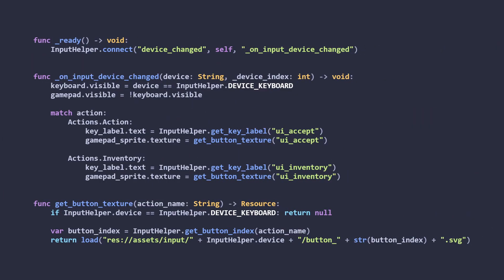Then, in the indicator, I can swap out which texture is showing as the input. There's also some smarts in here to guess which actual key or button is mapped to the given action that I'm indicating.